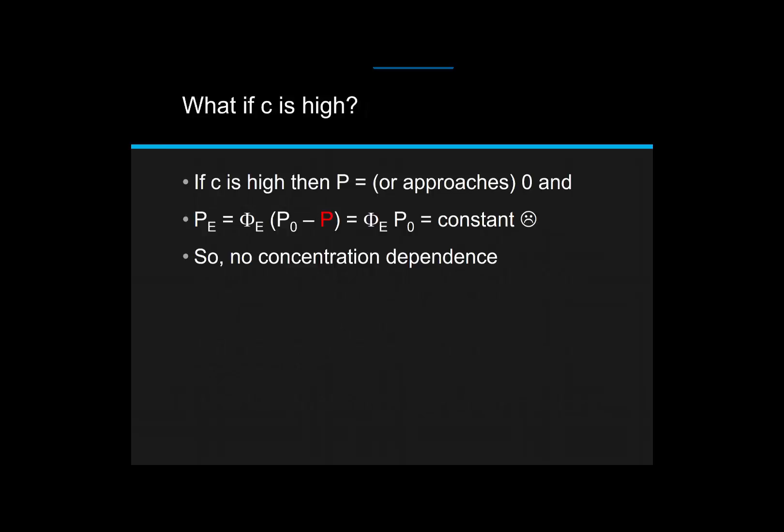Now I want you to think about with me for a second, what would be the consequence of having a high-sample concentration? Well, if we have a high-sample concentration, then P is basically going to be approaching zero. Under those circumstances, the emitted light will basically be a constant. I'll have no concentration dependence. So again, you have to be very careful. Your data can actually guide you when you're doing an emission experiment in terms of whether you're doing things properly or not. So the bottom line is, if you want concentration dependence for your signal, then it's very important to keep your sample concentration low.